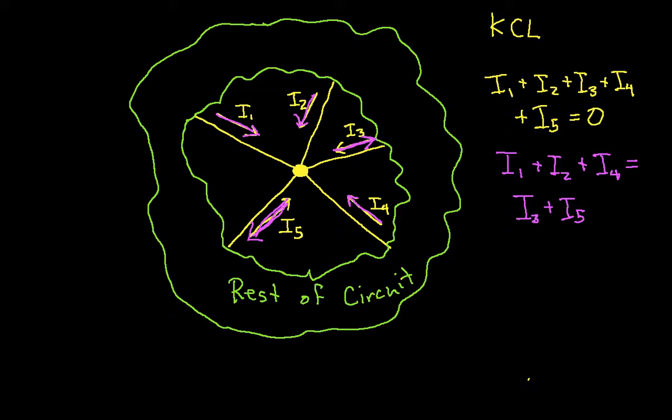I tend to prefer the second statement just because it intuitively makes sense to me that the current flowing in has to be the same, or the total current flowing in has to be the same as the total current leaving the node. So with that as an introduction, let's actually do an example.